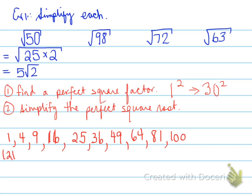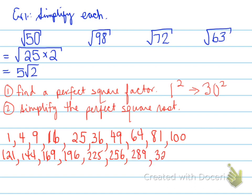Continuing: 11 squared is 121, 12 squared is 144, 13 squared is 169, 14 squared is 196, 15 squared is 225, 16 squared is 256, 17 squared is 289, 18 squared is 324, 19 squared is 361, and 20 squared is 400.